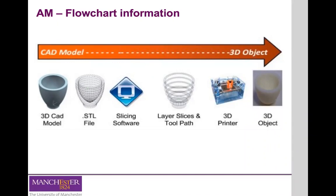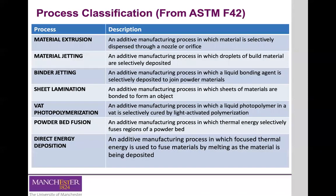Once you have a CAD model, it is tessellated into an STL file. This file is then sliced, and those slices are physically reproduced using one of the available 3D printers to build your parts. We've classified these processes according to the current standard, ASTM F42. What you really need to know are the working principles of the different additive manufacturing processes: namely material extrusion, binder jetting, VAT photopolymerization, and powder bed fusion.